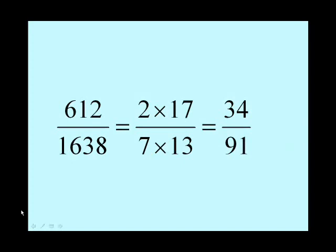But by using prime factors, we're absolutely secure. We know there is no common factor between those two numbers, 34 and 91. And that is a lowest terms fraction. And that's it.